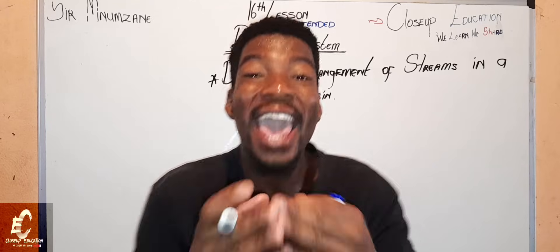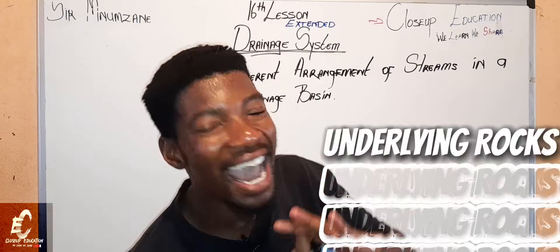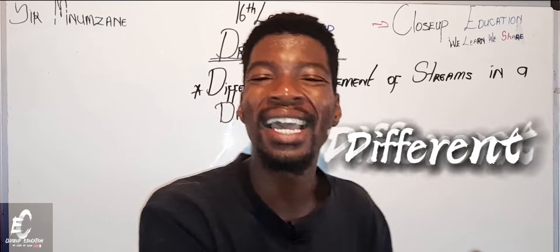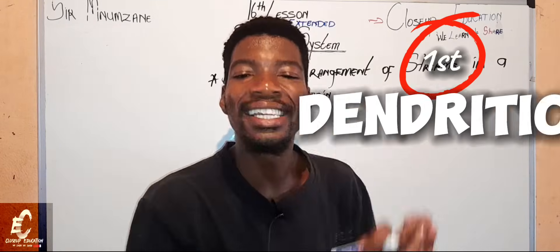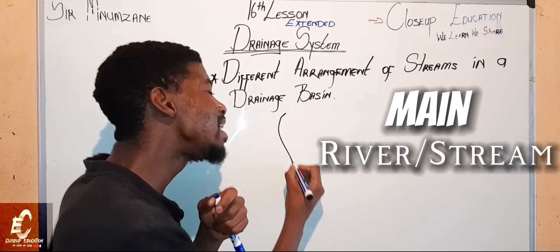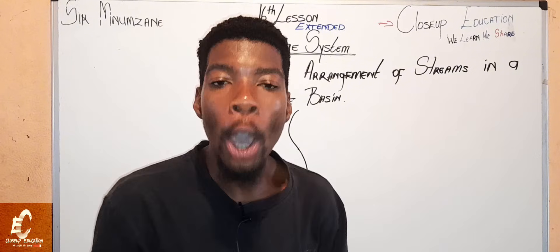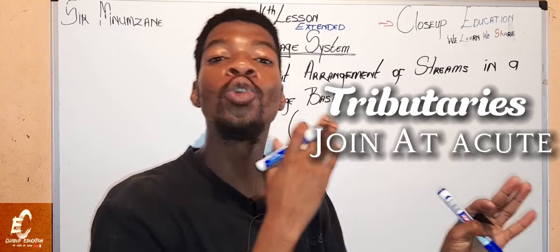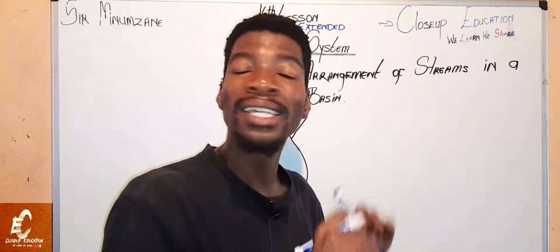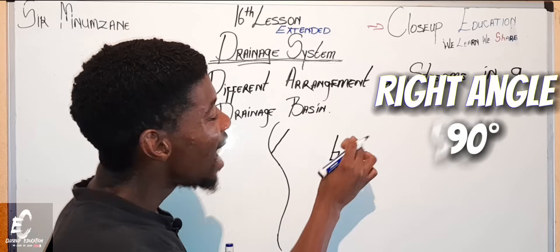What actually makes the different arrangement of streams possible is called the underlying rocks. To better understand the underlying rocks, we have to draw a structure of our different patterns. Our first pattern is called the dendritic pattern. The dendritic pattern consists of the main river, and it is joined by its tributaries at an acute angle. An acute angle is smaller than a right angle — 90 degrees.